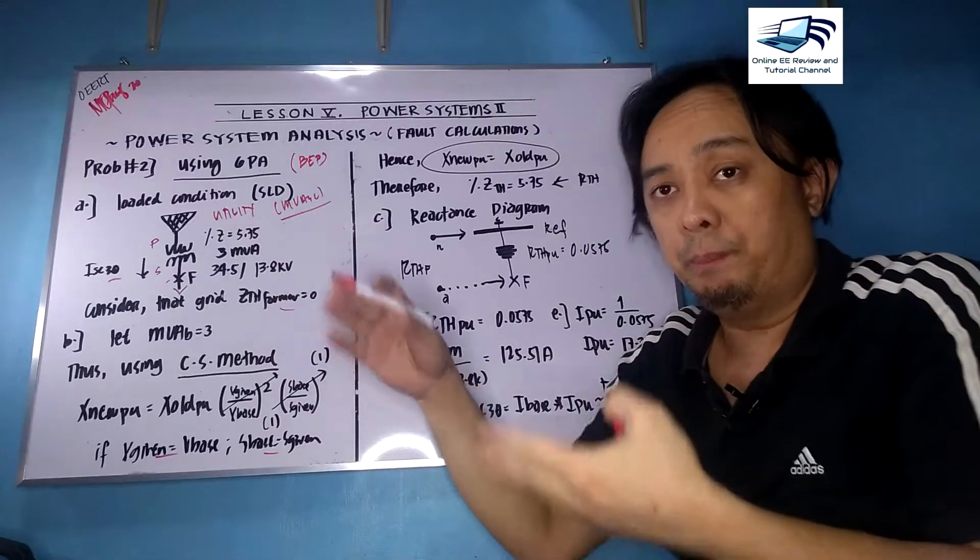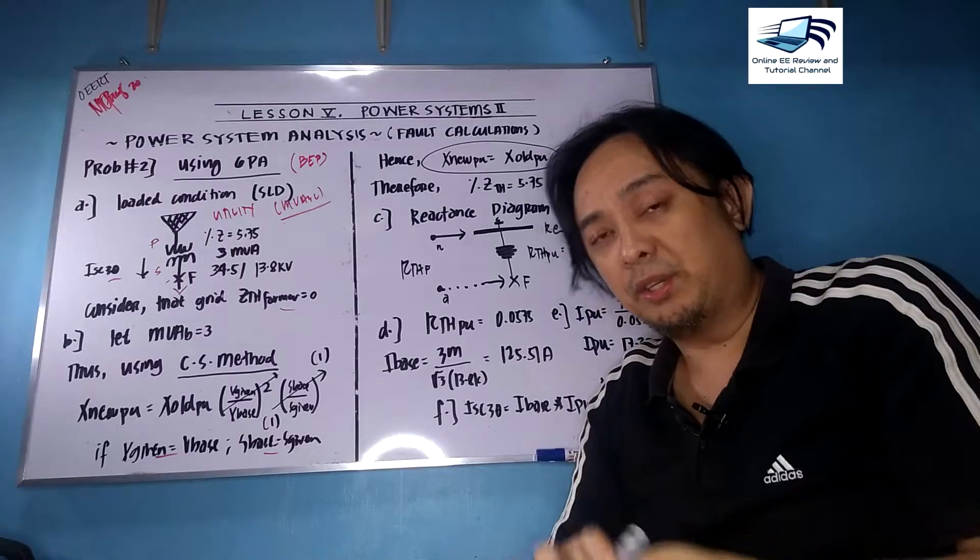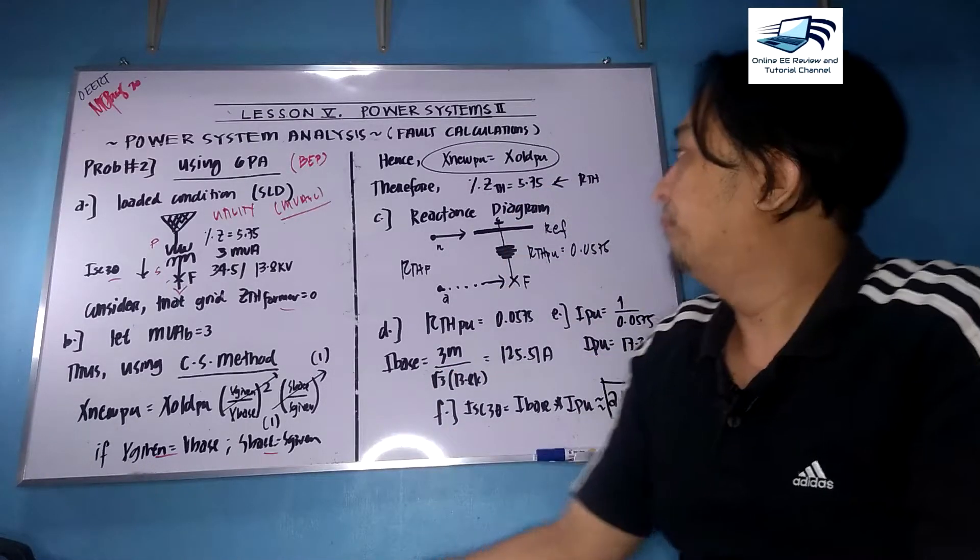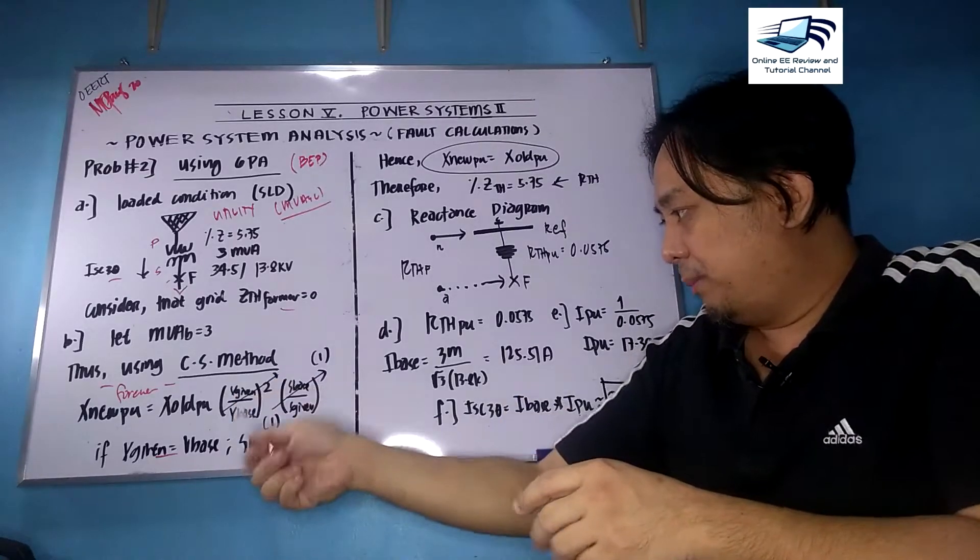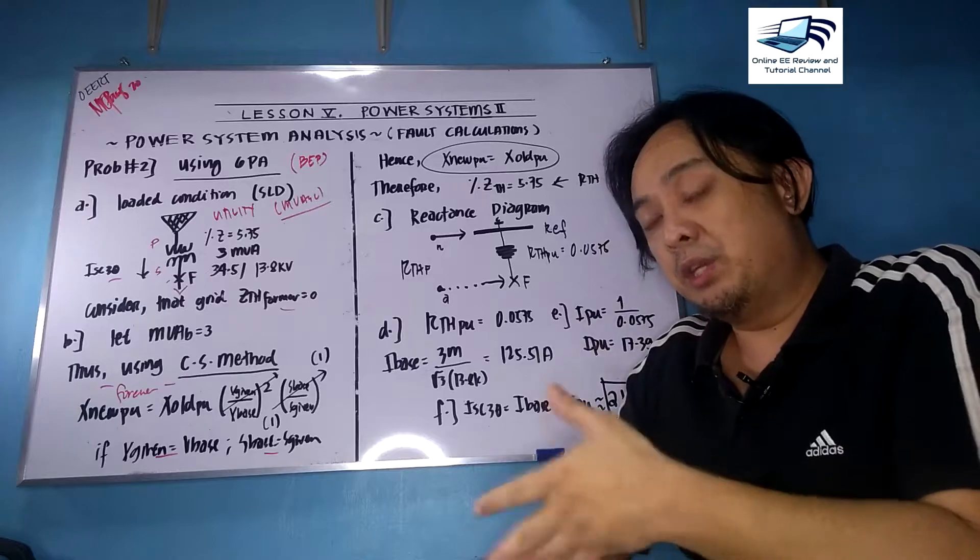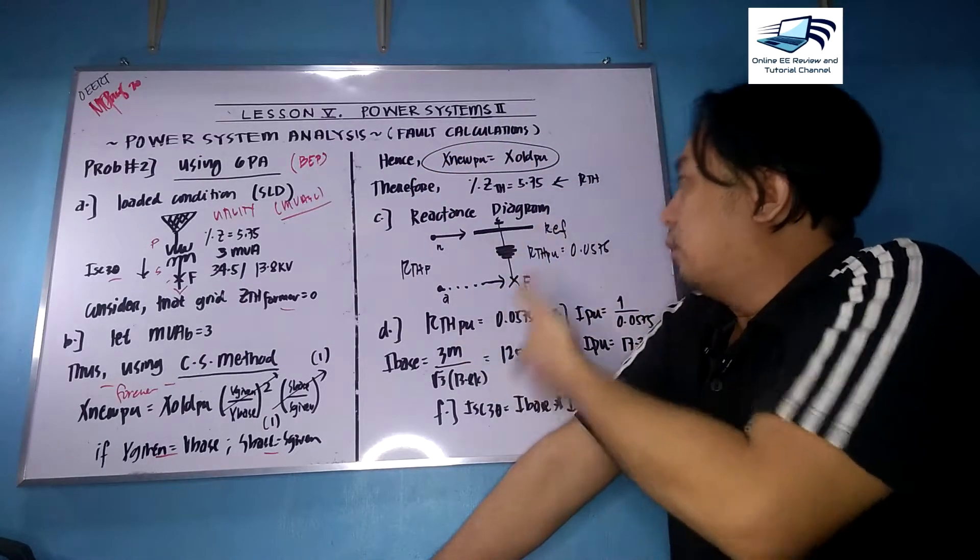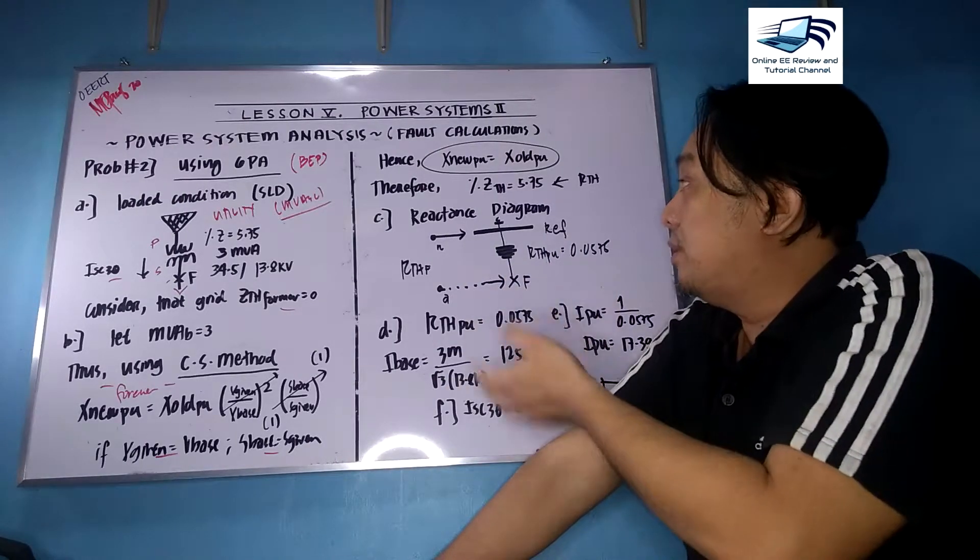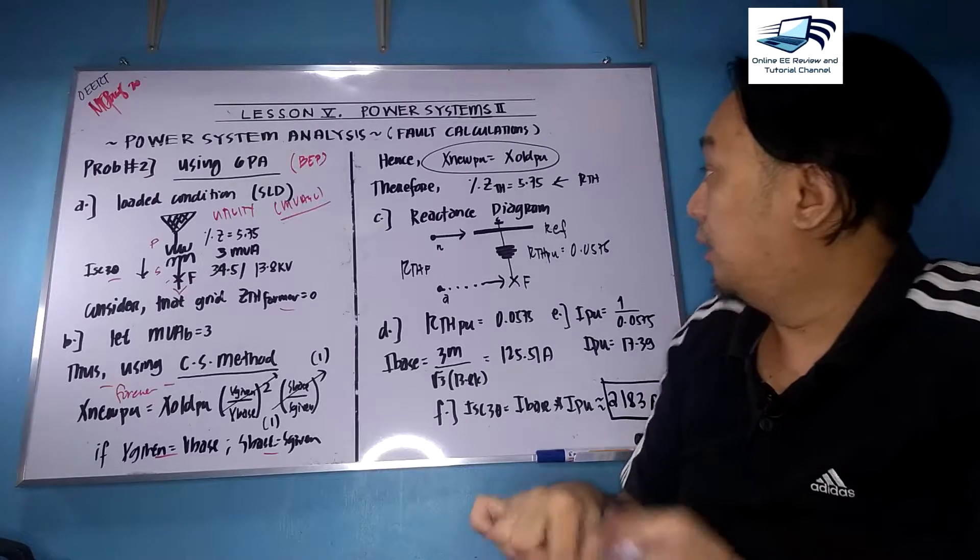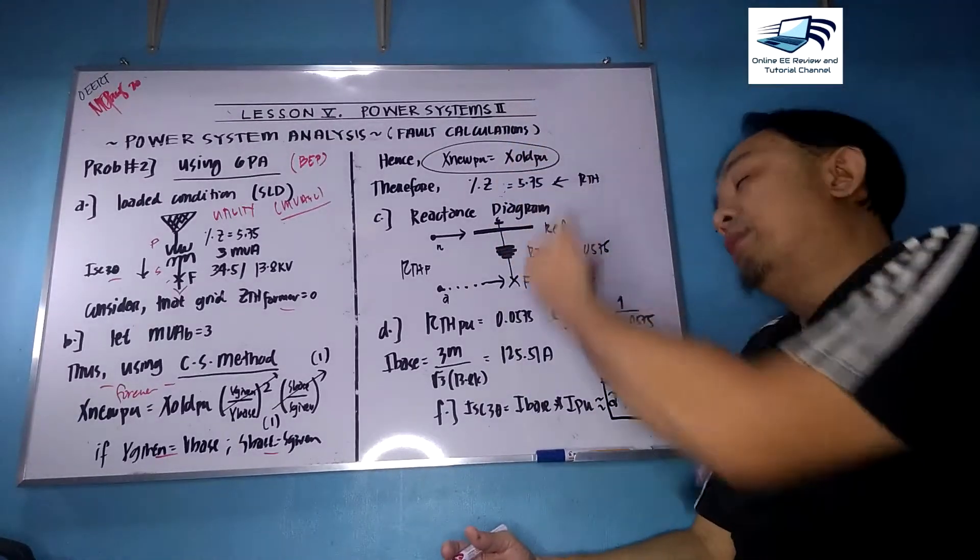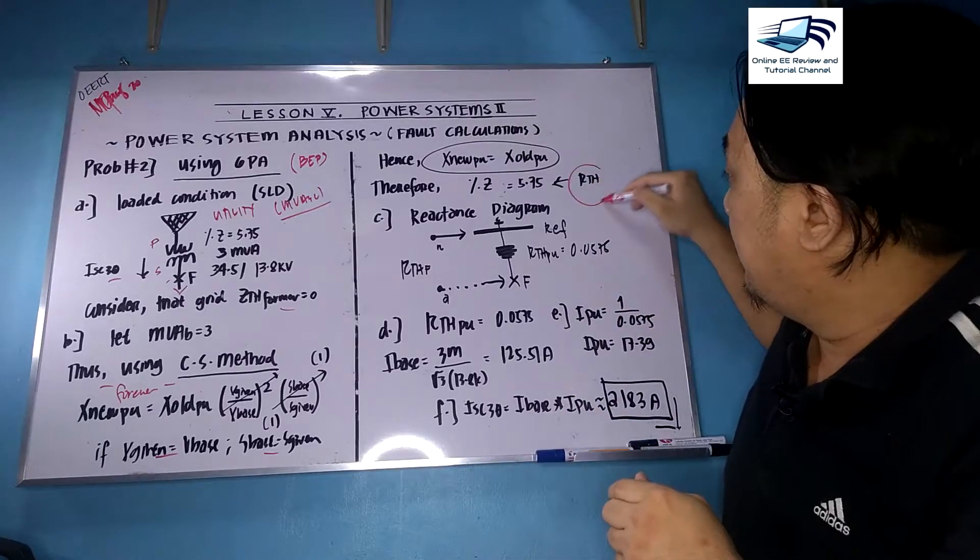From the forever formula, we can have V given and V base here, and S base and S given. They're equal to one. The Common Sense Method is: X_new equals X_old. It means whatever you're given is your new value of impedance, reactance, or resistance. In this case, we have the 5.75 percent impedance. The answer will be 5.75 as well. The percentage impedance is 5.75, which is also our RTH.